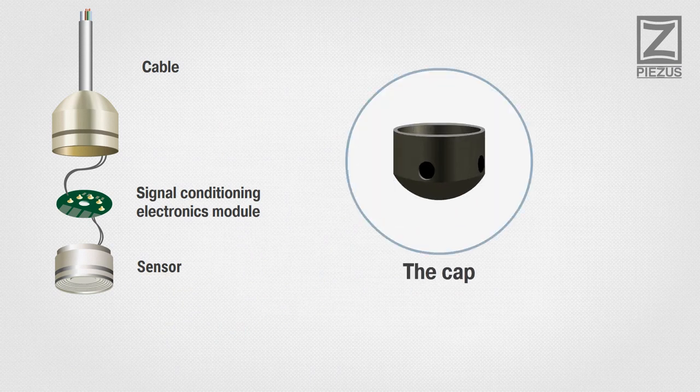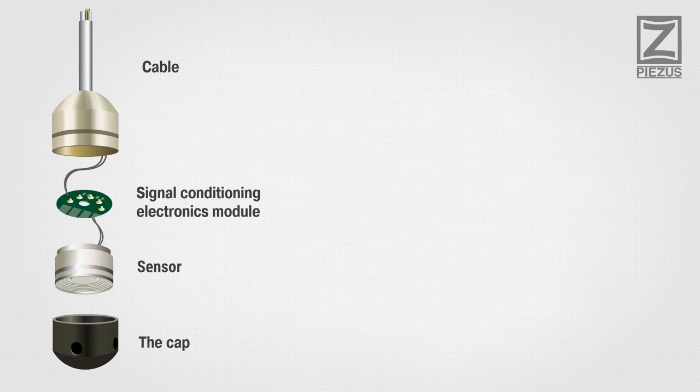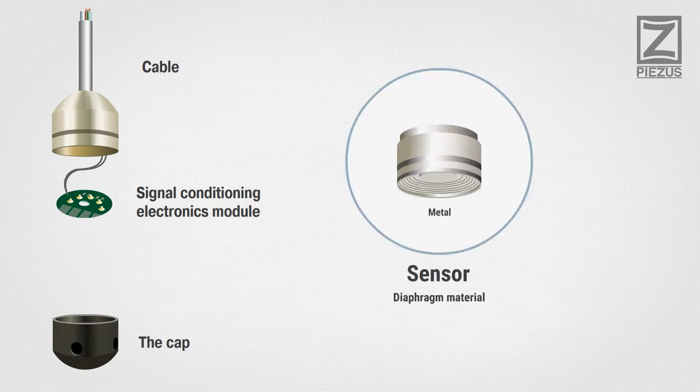The cap of the transmitter is removable and helps protect the diaphragm. The sensor element transforms the diaphragm's movement into an electrical signal.